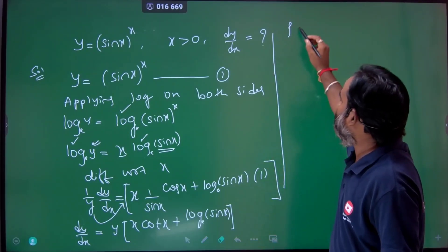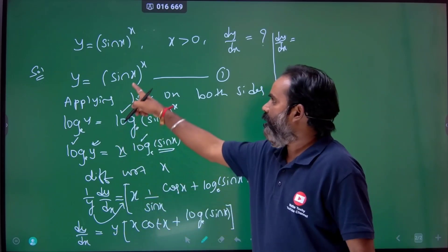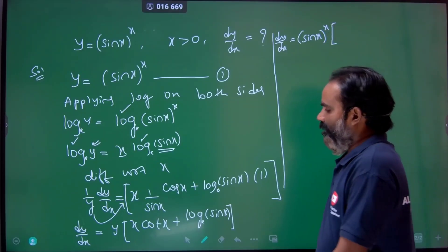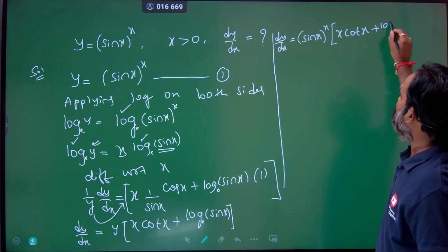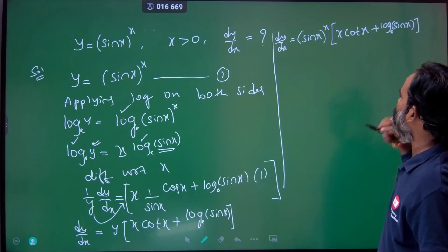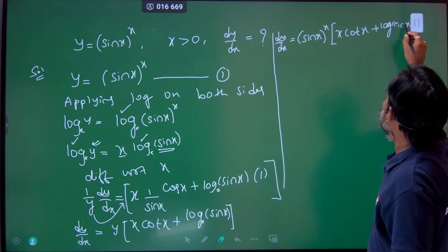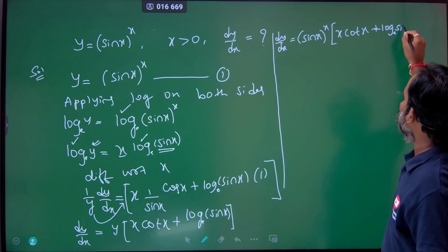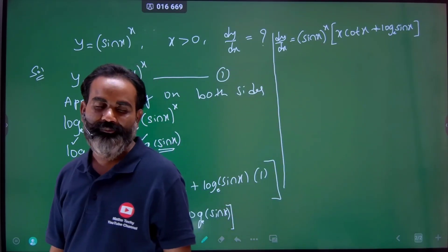We already know y is sin x to the power of x. So directly, dy by dx equals sin x to the power of x, times the bracket: x cot x plus log to the base e of sin x. That is the final answer.